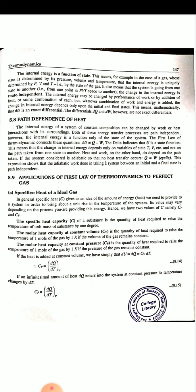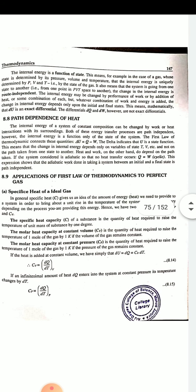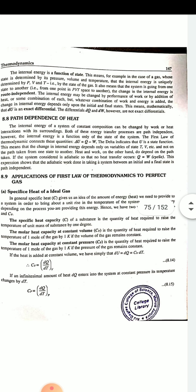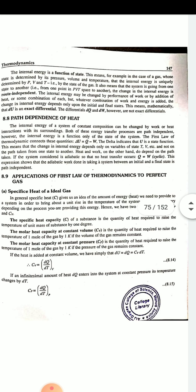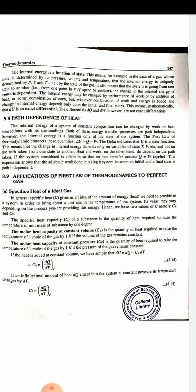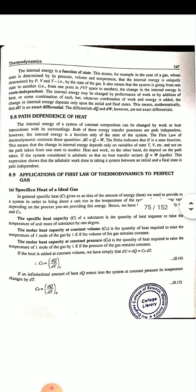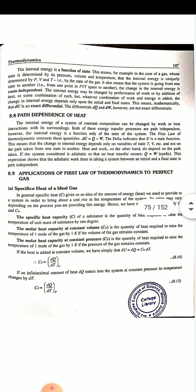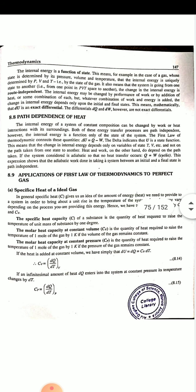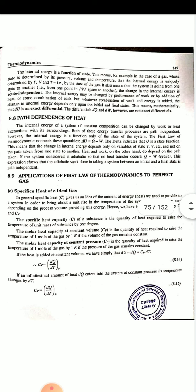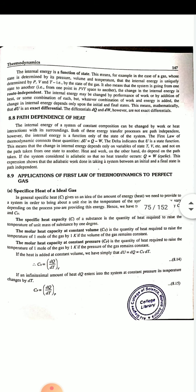Whatever combination of work and heat is added, the change in internal energy depends only upon the initial and the final state. This means mathematically that internal energy is an exact differential — that may come for the MCQ. The heat depends on the path. Both work and heat interaction with surroundings are path dependent; however, the internal energy is a function only of the state of the system. The first law annexes this as ΔU = Q − W, and the delta indicates that U is a state function.